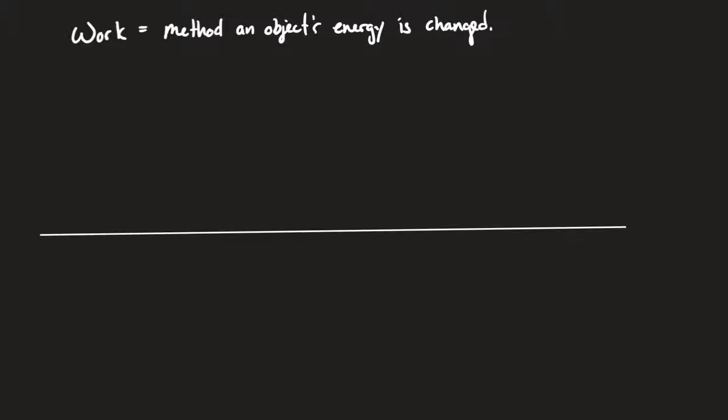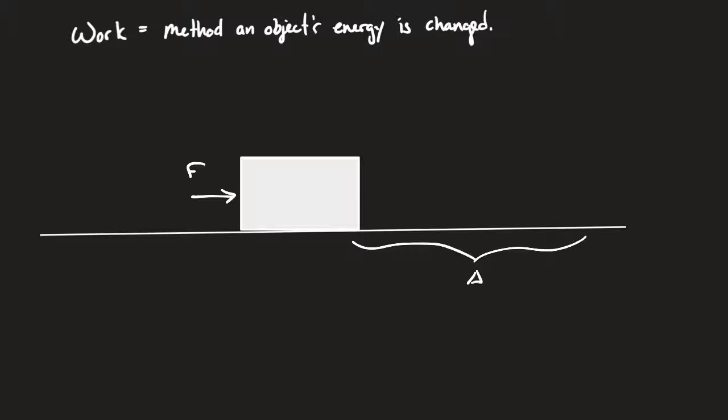In fact, we will define work as the method by which an object's energy is changed. Now, first-year physics students learn about work. When they learn about work, they all tend to learn the same thing. They learn that if you wish to do work, you've got to push on an object in order to cause it to change position.